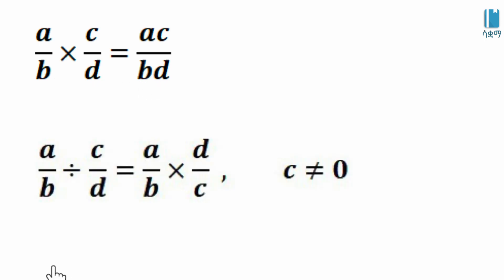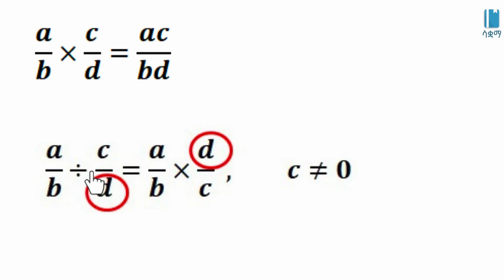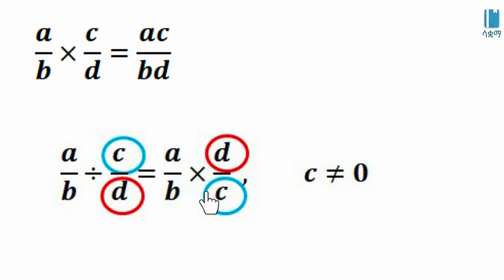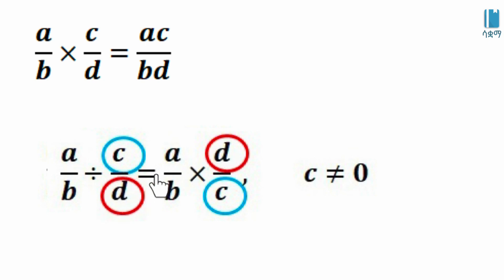And if A over B divided by C over D, we can write the reciprocal of C over D. The result is A over B multiplied by D over C. So, A over B divided by C over D results in A·D divided by B·C.